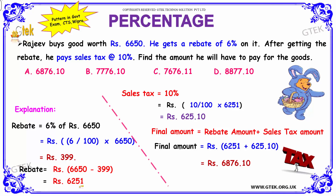Subtracting the rebate — that is, the reduction — from the total worth: 6650 minus 399 equals 6251. It is given that sales tax is 10 percentage, so Rajiv has to pay 6251 for the goods after the rebate. He then has to pay 10 percentage of that amount as sales tax. So 10 divided by 100, multiplied by 6251, gives a sales tax of rupees 625.10.